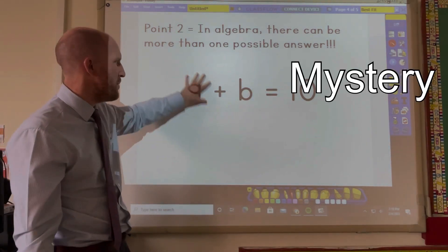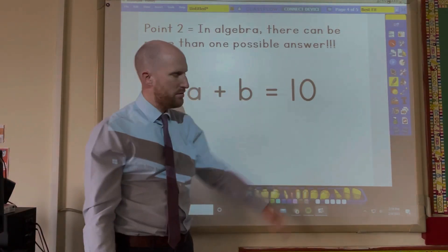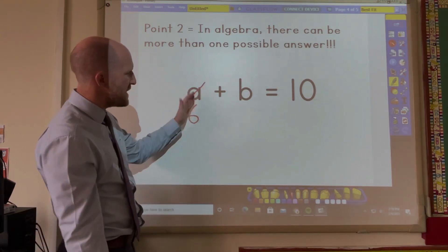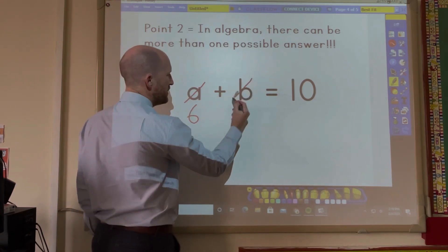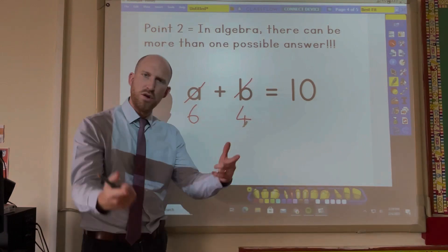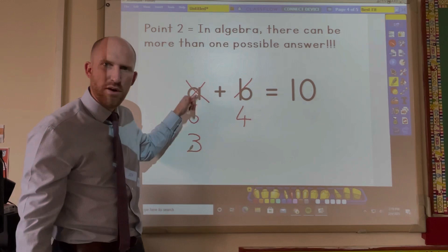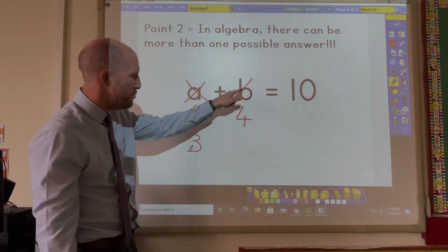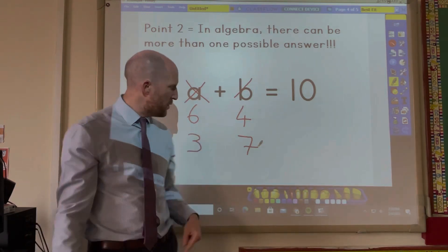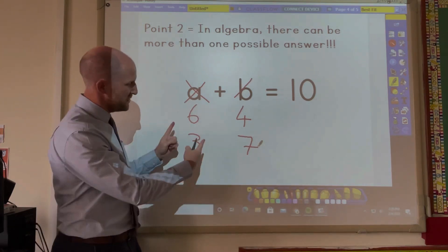So that means that we have a mystery number add a mystery number makes 10. So how about if A was 6. If A was 6, B would have to be 4. But there's other ways you can do this. A might be 3. And if A was 3, then B would have to be 7, wouldn't it? In the comments below, let me know if you can find any more possible answers to this equation.